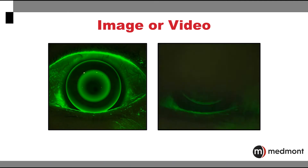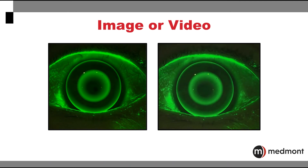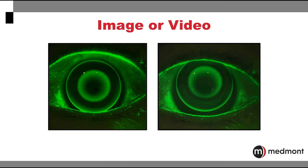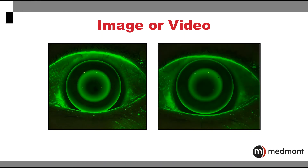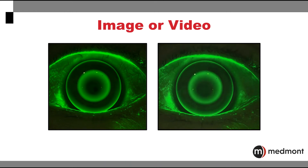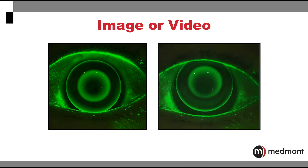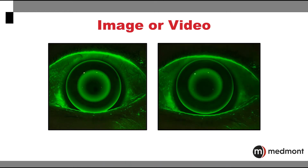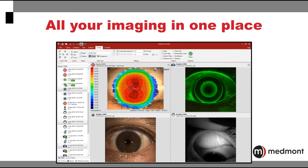With all of our imaging options — the meibography, the anterior segment white light imaging, and the fluorescein assessment — we can choose to document in images or in video. The Meridia puts all of this imaging in one place, in one software, in one patient file, making both your assessment as well as your communications with the patient incredibly efficient.